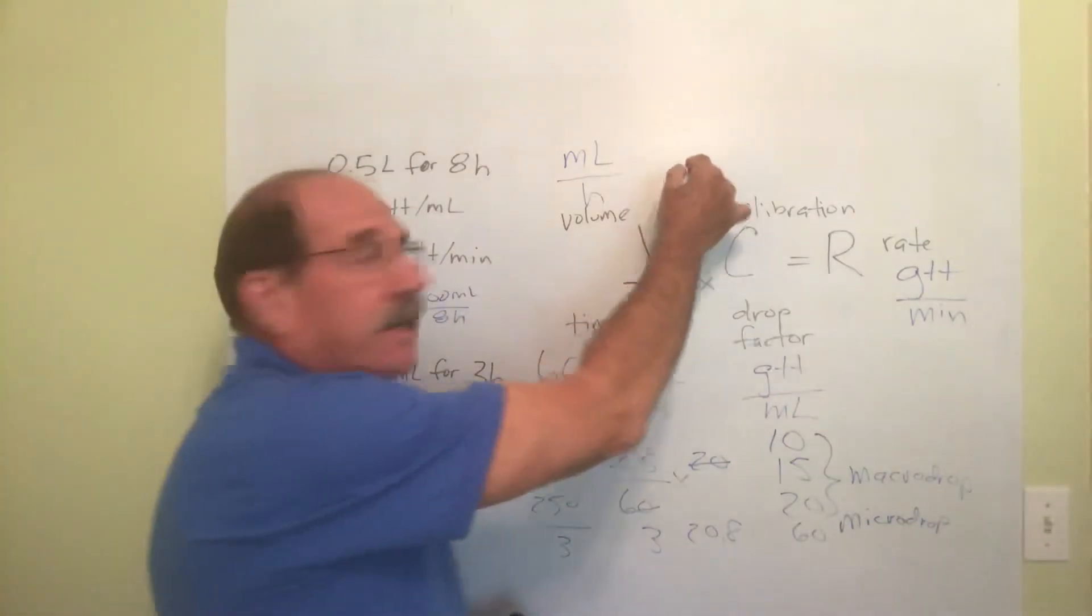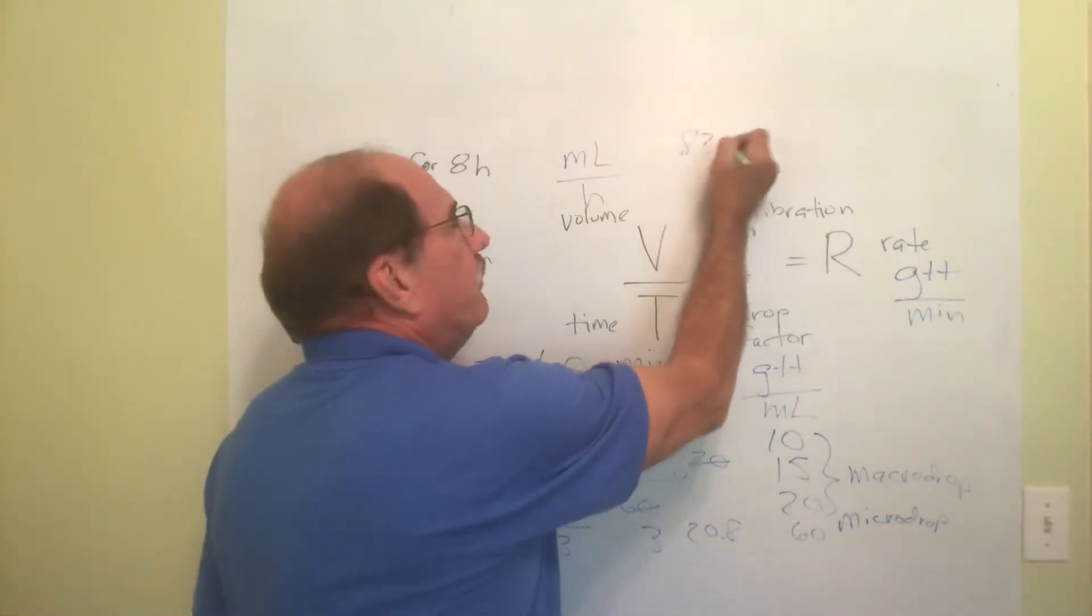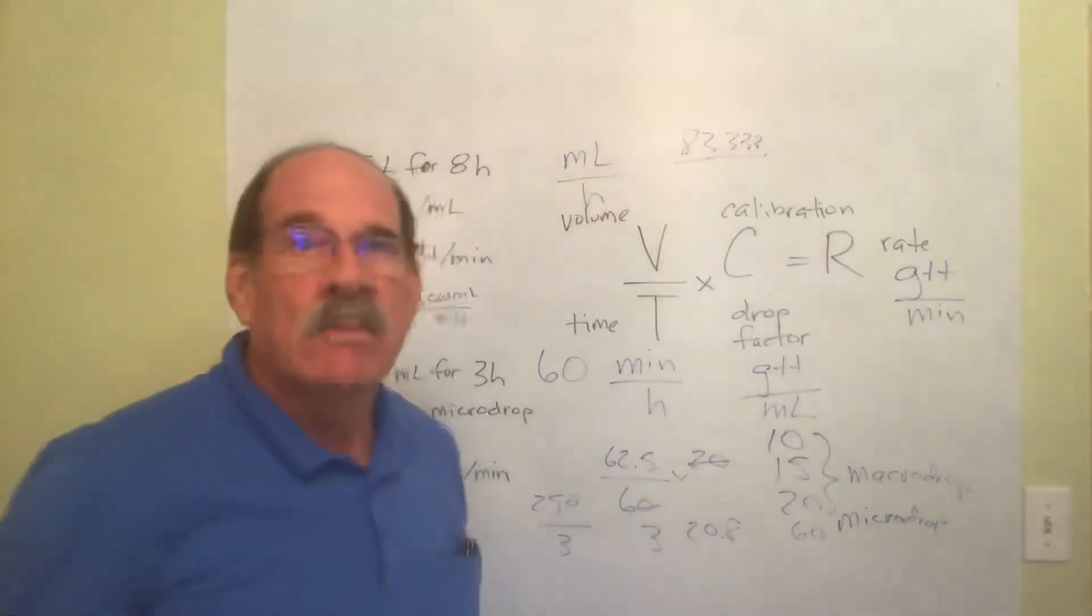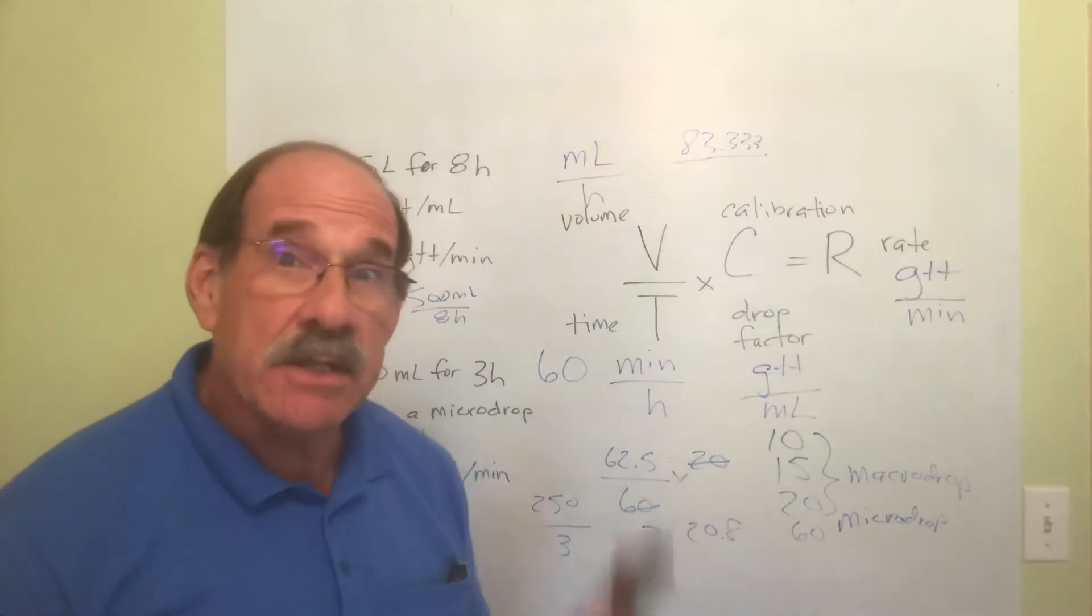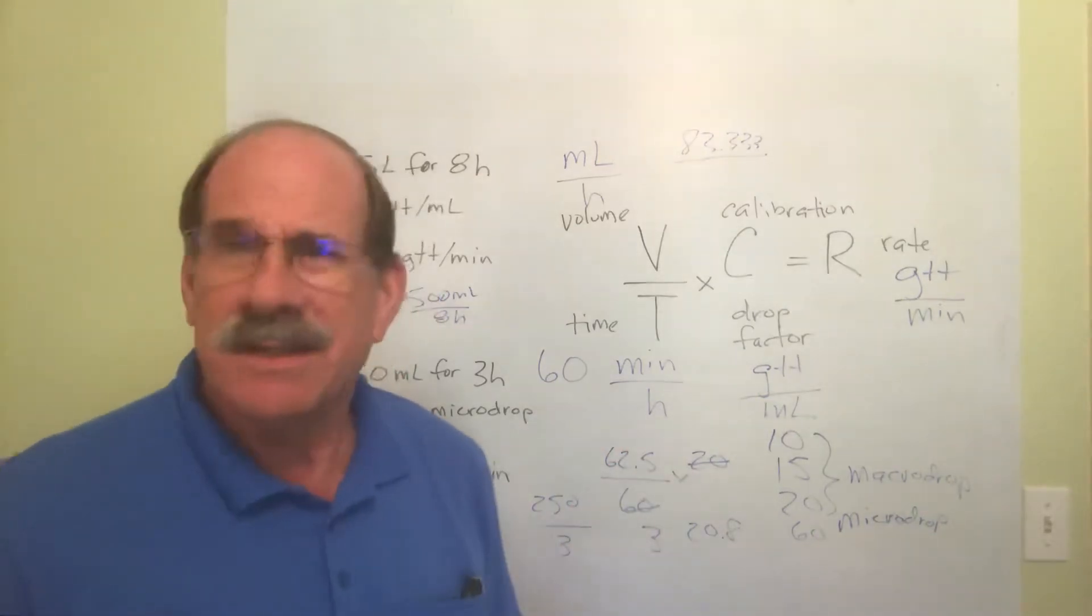So that's going to be all this junk here, I'm so sorry. V, I'll put it up here. V is 83.333. Over T, what is T going to be in this particular problem? The number 60.